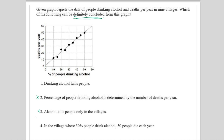You cannot say alcohol kills people only in those villages either. What you can definitely say is that when the percentage of people who drink alcohol is 50%, the death per year is 50. It is not mentioned that these deaths are happening only because of drinking alcohol. The graph just depicts data of people drinking alcohol and deaths per year — don't conclude deaths are caused by alcohol. It could be accidents or any other reason.